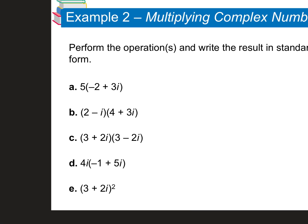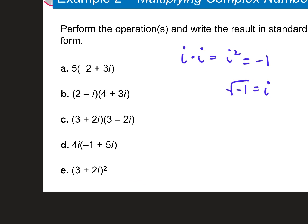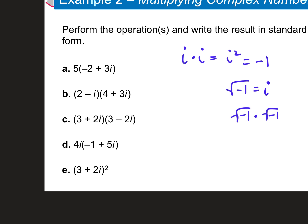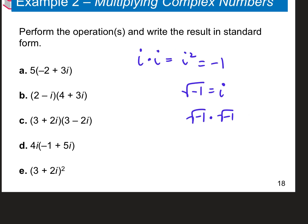Now something a little different — write this down. i times i equals i squared. Anybody know the value of i squared? Negative 1. Whenever you see i squared, you cross it off and replace it with negative 1. This comes from the fact that the square root of negative 1 is i, so multiplying square root of negative 1 times itself gives negative 1 squared, which cancels to negative 1. So i squared equals negative 1.